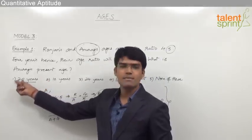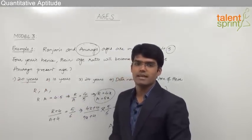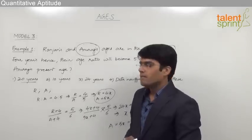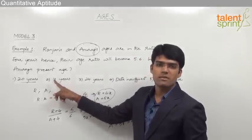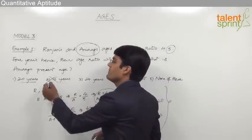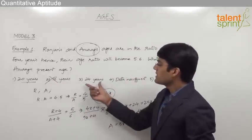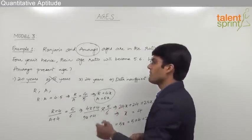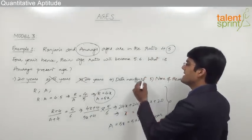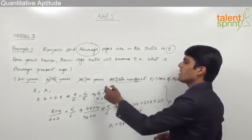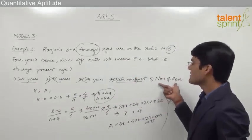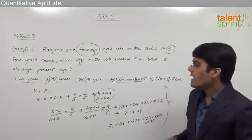We need to find Anurag's present age, so let us eliminate options that are not multiples of 5. Option one is 20, which is a multiple of 5, so it can be the correct answer. Option two is 16, which is not a multiple of 5, so it gets eliminated. Option three is 24, which is also not a multiple of 5, so it gets eliminated too.